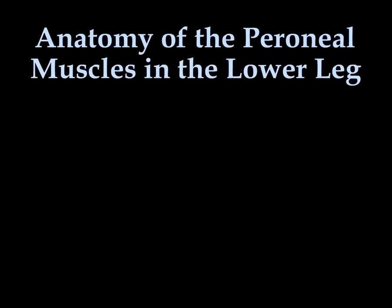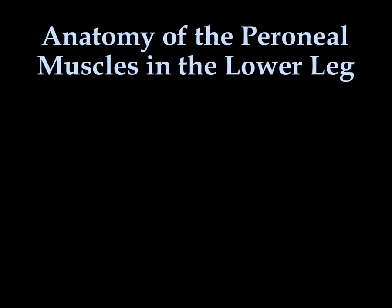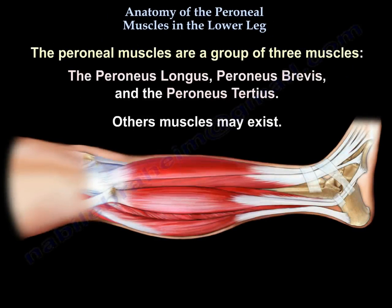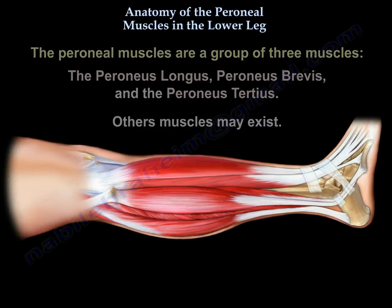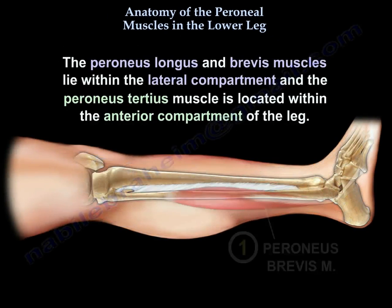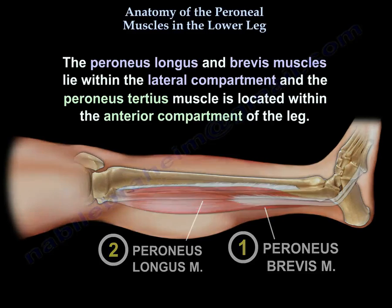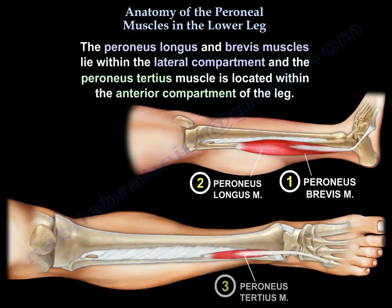Anatomy of the perineal muscles in the lower leg. The perineal muscles are a group of three muscles: the perineus longus, the perineus brevis, and the perineus tertius. Other muscles may exist. The perineus longus and brevis muscles lie within the lateral compartment, and the perineus tertius muscle is located within the anterior compartment of the leg.